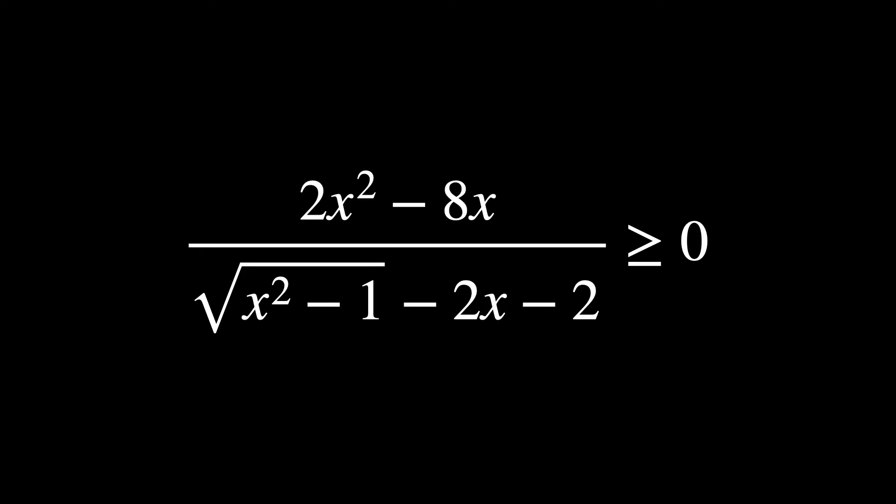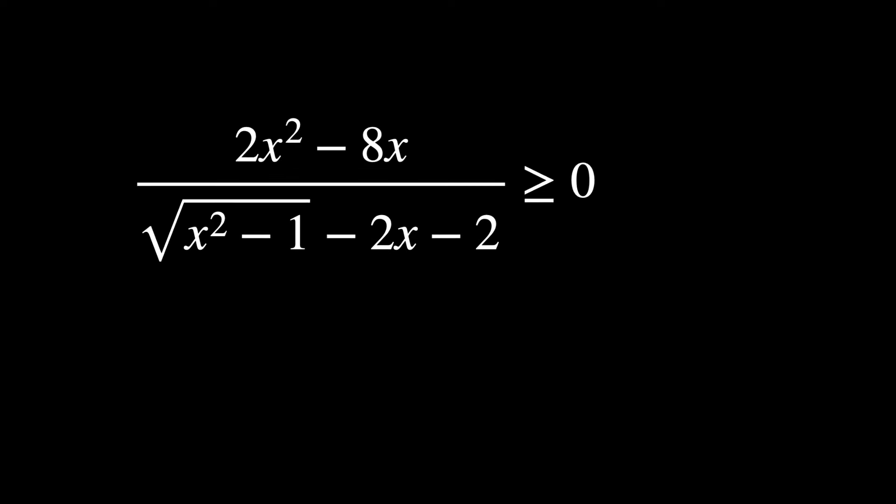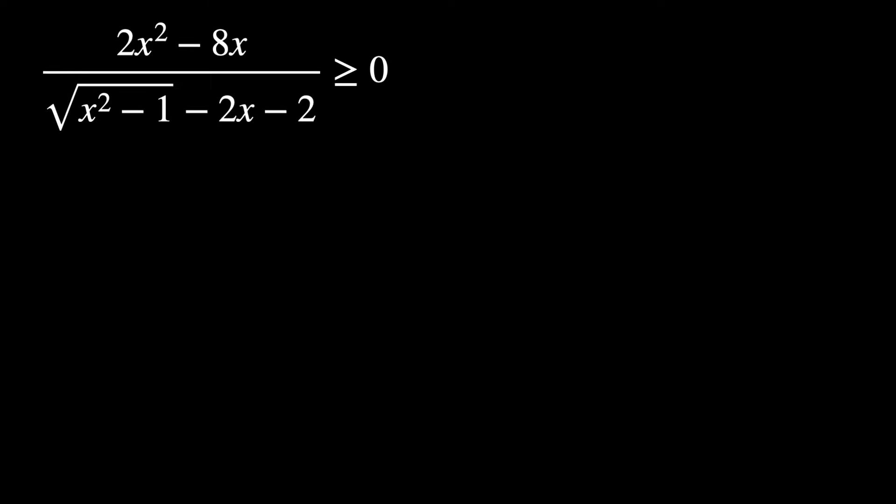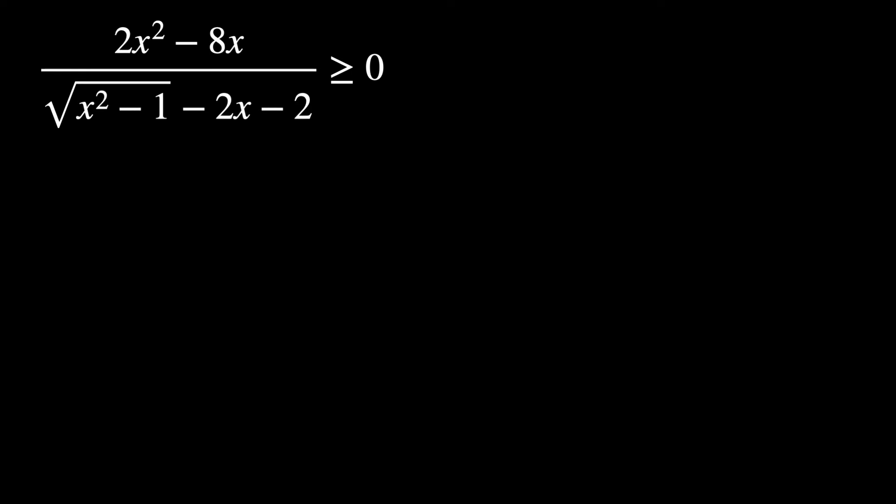The problem is: 2x squared minus 8x, over the square root of x squared minus 1, minus 2x minus 2, is greater than or equal to 0.